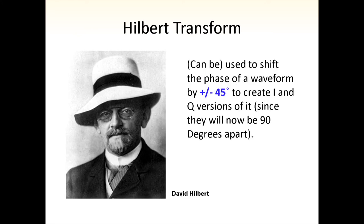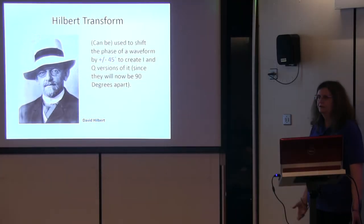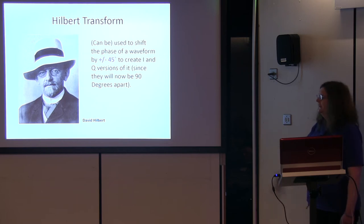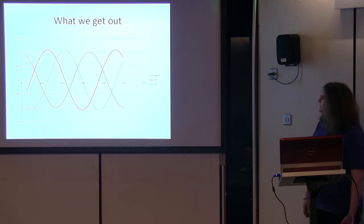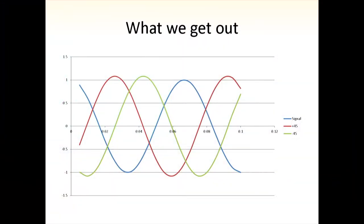The Hilbert Transform is another interesting one. This guy is sort of to signal processing what Marconi is to radio — he did some of the serious foundational work. There's a Hilbert Transform you can implement with the FIR filter we looked at earlier, giving you a plus or minus 45 degree phase shift. So in software we can use it to generate sine and cosine by generating a minus 45 and a plus 45 shift — giving you two signals that are 90 degrees apart in total.